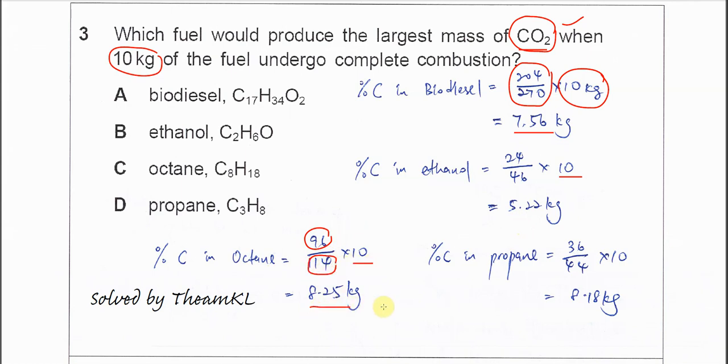You get 8.25 kg for octane. For propane, you use 36 over 44 times 10, getting 8.18 kg. So the highest percentage of carbon is in octane.